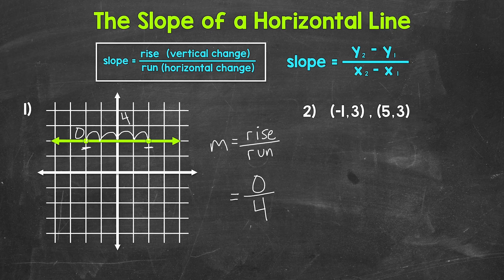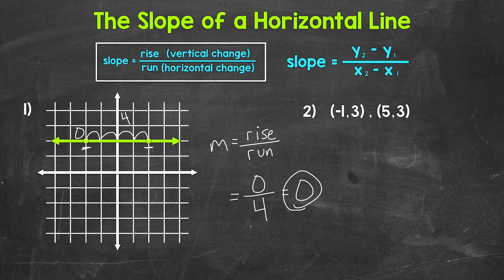Any fraction with a numerator of zero equals just zero, so we can write this as zero. We would say that this line has a slope of zero, and that goes for any horizontal line. Any horizontal line has a slope of zero. The y values stay the same as we move across the line, and the x values increase. For this line, the y value of any point is going to be two.